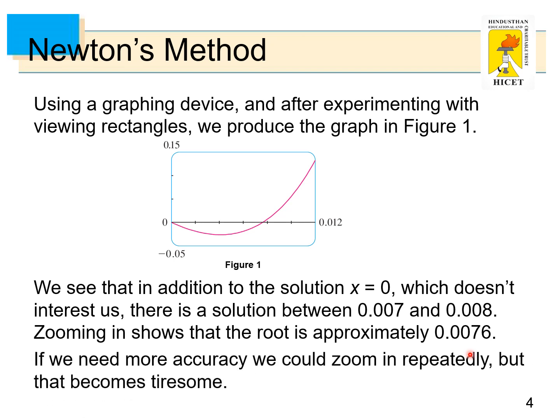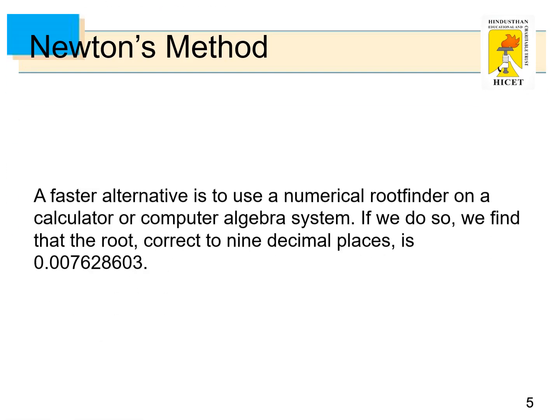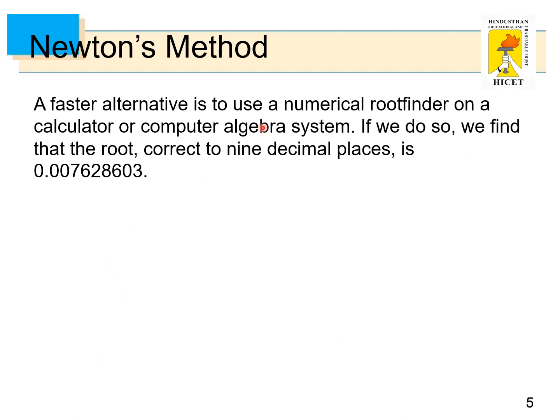If we need more accuracy, we could zoom in repeatedly, but that becomes tiresome. A faster alternative is to use a numerical root finder on a calculator or computer algebra system. If we do so, we find that the root correct to 9 decimal places is 0.007628603.